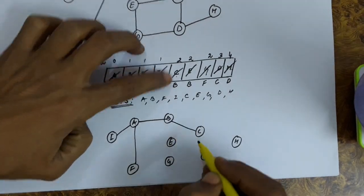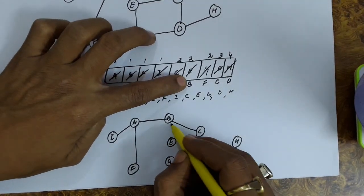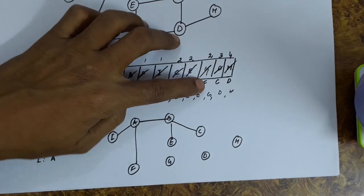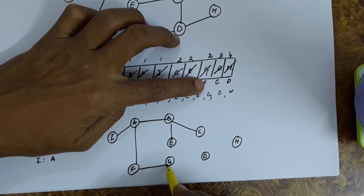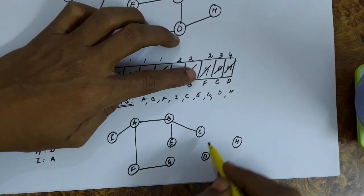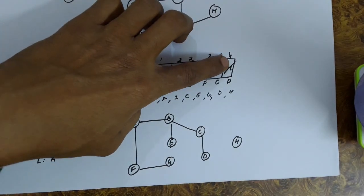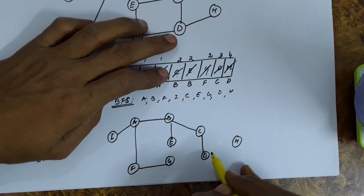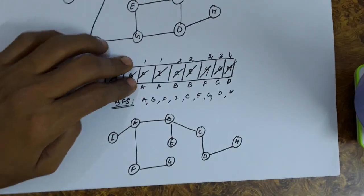C B is an edge. E B is an edge. G F is an edge. D C is an edge. H D is an edge. Fine.